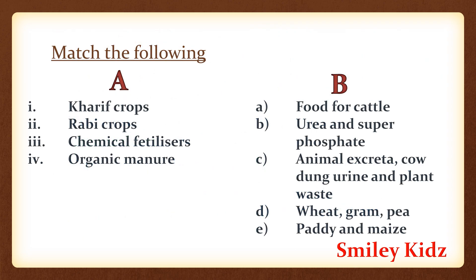Moving ahead to the next bit — match the following. Column A: Kharif crops, Rabi crops, chemical fertilizers, organic manure. Column B: food for cattle, urea and super phosphate, animal excreta, cow dung, urine and plant waste, wheat, gram, pea, paddy and maize.